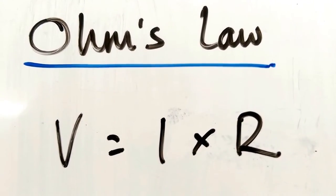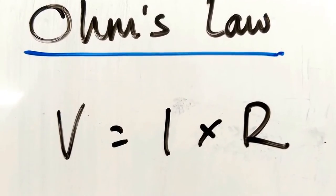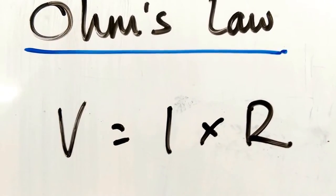Ohm's law. Ohm's law is that voltage is current times resistance. Potential difference is current times resistance: V equals I times R.